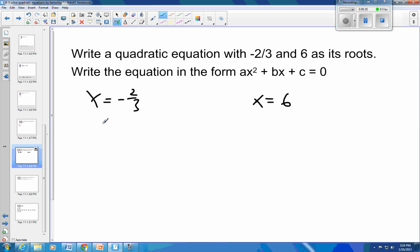If I want to work backwards, then I'm going to add 2 thirds to both sides here. This is going to be x plus 2 thirds is equal to 0. And I'm going to have minus 6 from this side and minus 6 from this side. And I know that x minus 6 is equal to 0.